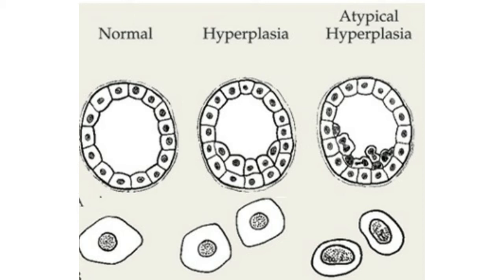This diagram shows a duct lined by normal cells, with the normal cell also shown beneath. Beside that, there is a duct showing hyperplasia of the lining cells, which are also normal in morphology. However, there is another duct showing atypical epithelial hyperplasia in which the lining cells are shown below. These cells are atypical and have a high nuclear-to-cytoplasmic ratio.